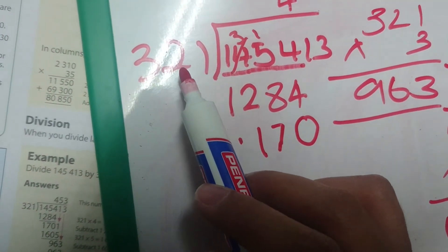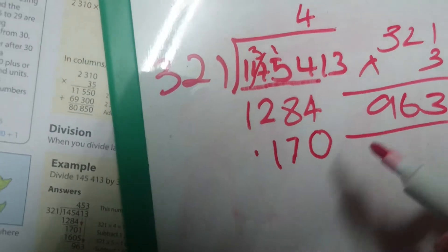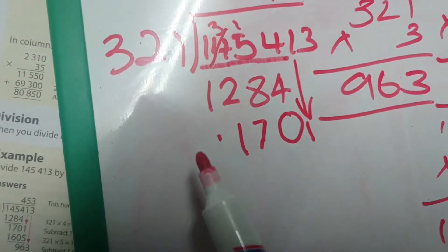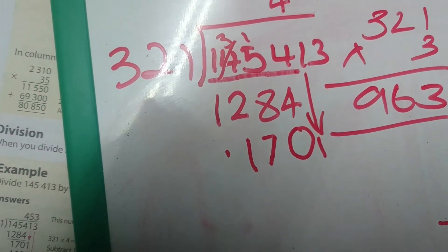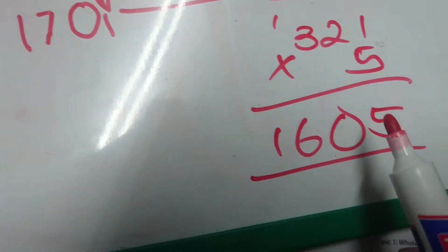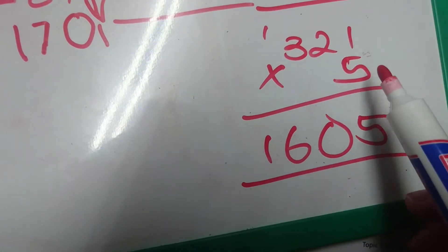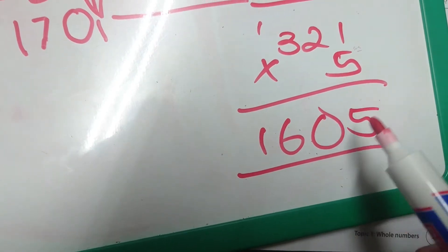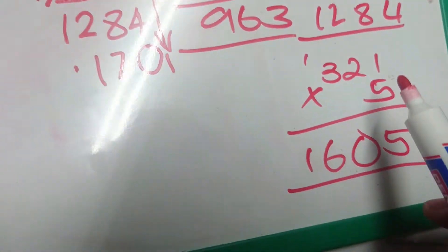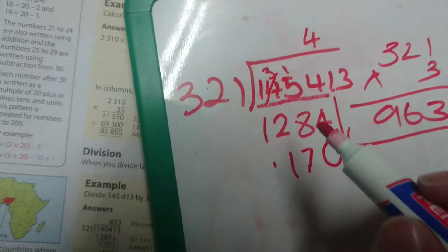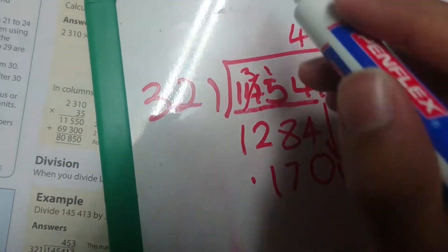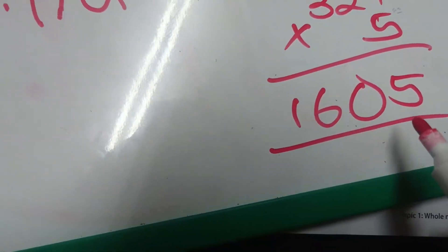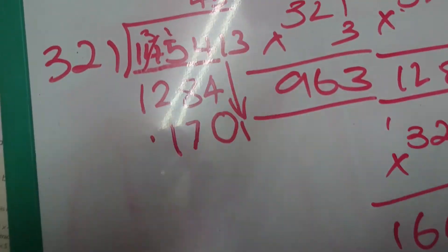How many times can 321 go into 170? It's too small, so it cannot go into it. We will therefore bring down our 1. How many times can it go into 1,701? If you look here, 321 times 5 is going to give us 1,605. If you say times 6, the number is going to be higher. So we will use this number here. We will put down our 5 over here and we will write down this number below and subtract it to see what the difference is.